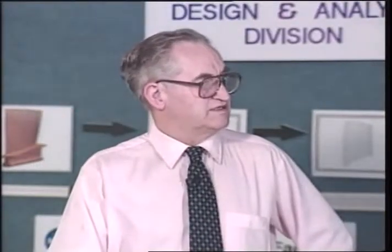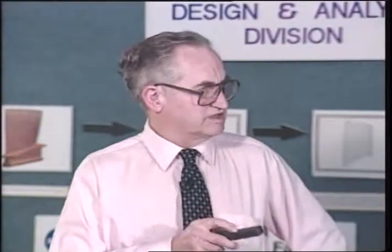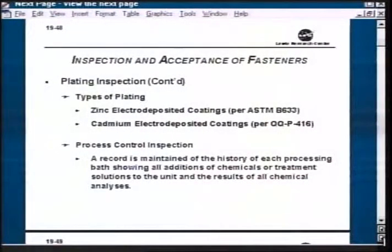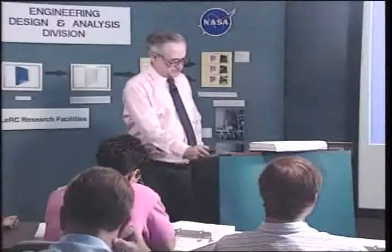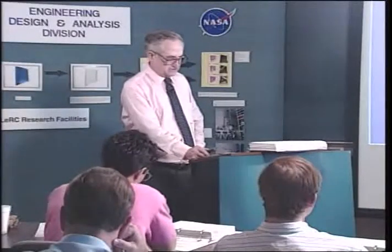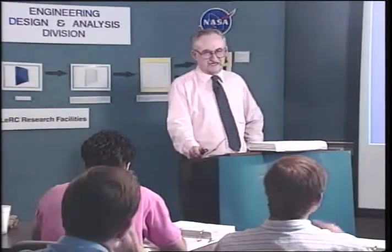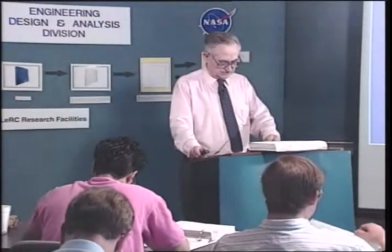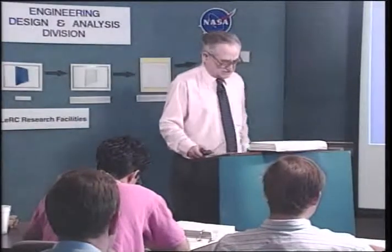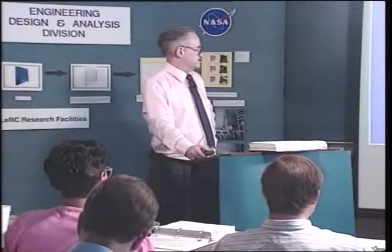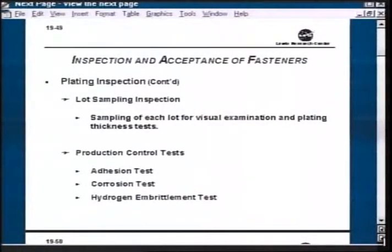Zinc is usually covered by ASTM B633 and cadmium is covered by federal spec QQ-P-416. You can do process control inspection - the plating outfits are supposed to do that, and most of them do, so that they control the amount of additives they put in. If their bath gets tired, they can add chemicals and take new readings. You can do sampling inspection, visual inspection, and plating thickness tests. I believe a guy from Lewis - Dan Roth - developed a method of inspecting the thickness of plating, and I think ultrasonically measuring plating thickness on materials.